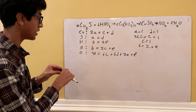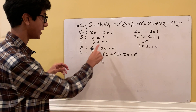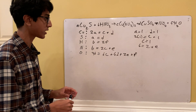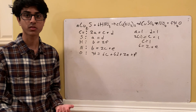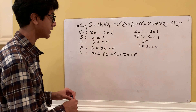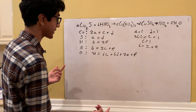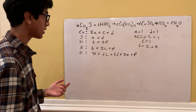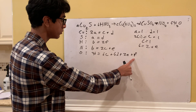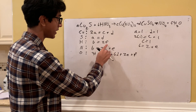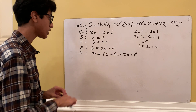To eliminate F, we note that B = 2F from the H equation. If we multiply the oxygen equation by 2, we'll have 2F on both sides, and then subtracting the H equation from it will cancel out F. C and D are already known constants, so B and E are what we're solving for.